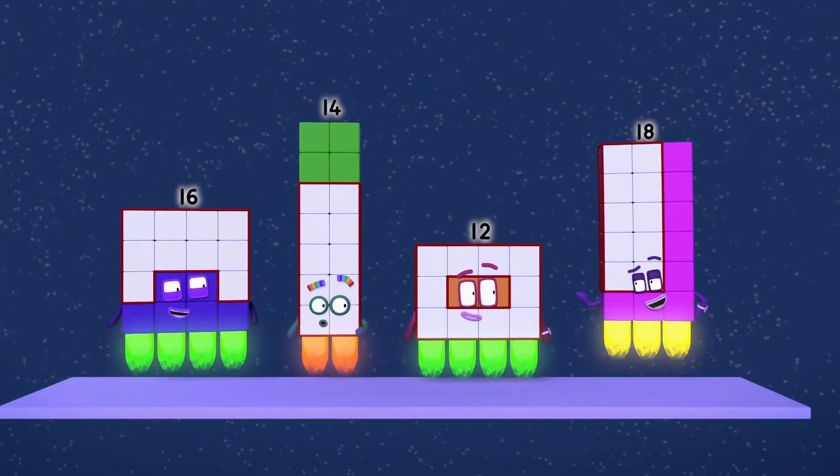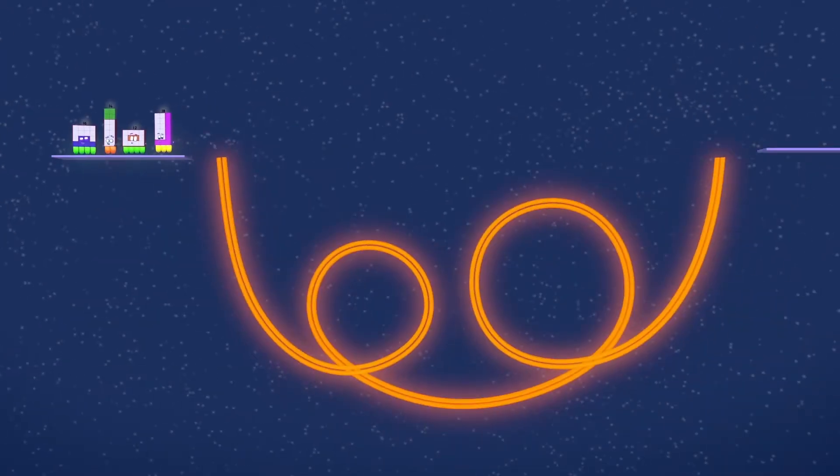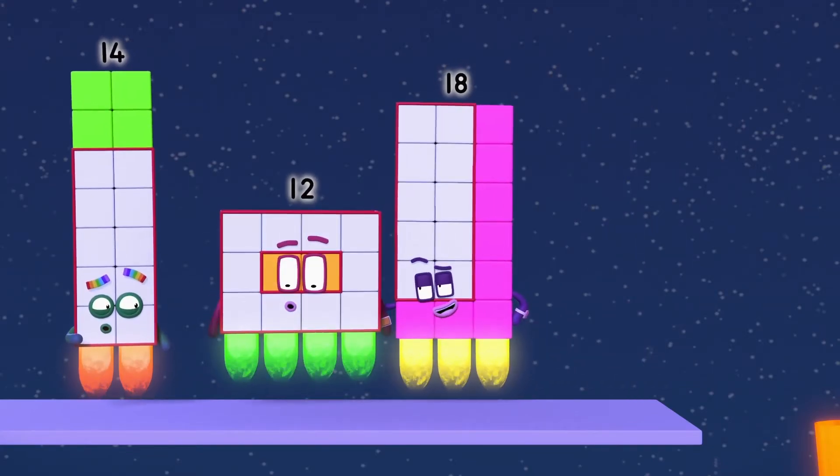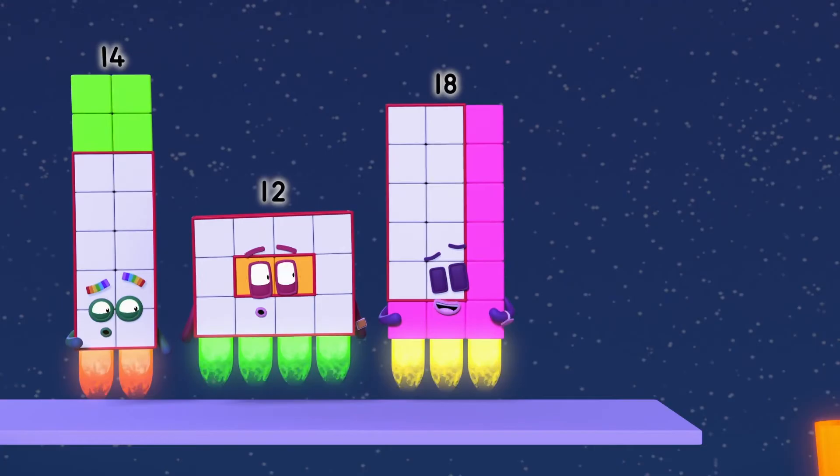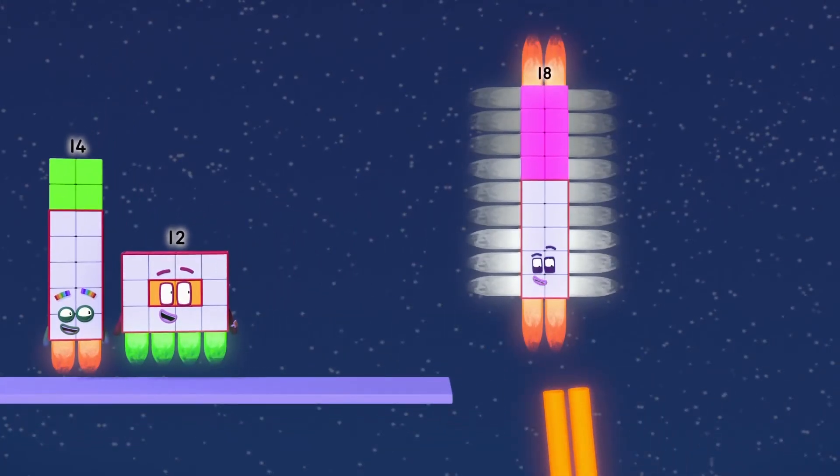Ha! Anyone can ride that thing! Check this out! The double looper has a two-ray, mateys! So you can only ride it if you can make a rectangle that's two blocks wide! Like this! Two by nine! Two rays and away!